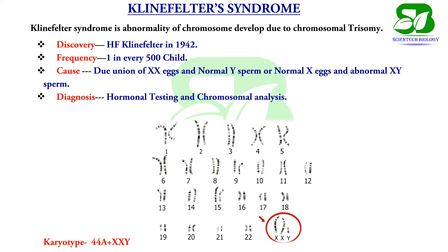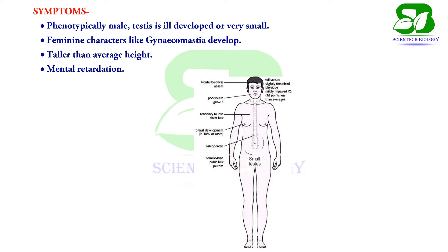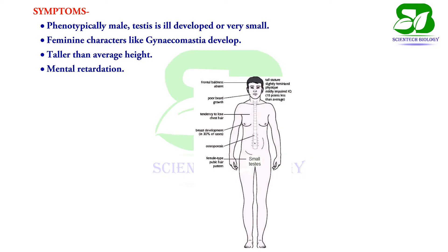One in every 500 children suffers from Klinefelter syndrome. This disorder was first discovered by H.F. Klinefelter in 1947. The body is phenotypically male with ill-developed testes, the chest is female-like, and the individual is usually taller than average height.